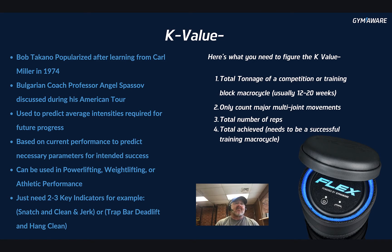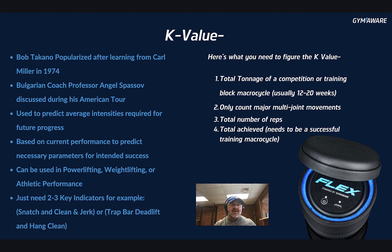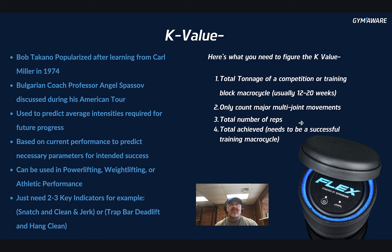Bob Takano popularized the k value here in America after learning from Carl Miller in 1974. The Bulgarian coach Professor Angel Spasov discussed it during his American tour, and all the coaches started talking about it. It's used to predict the average intensities required for future progress, based on current performance to predict necessary parameters for intended success in the future.